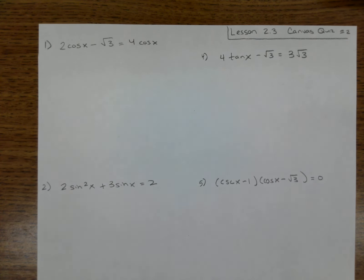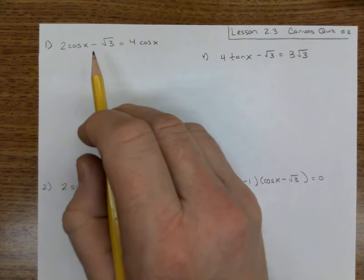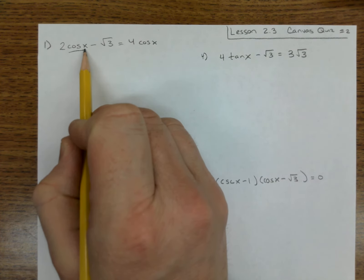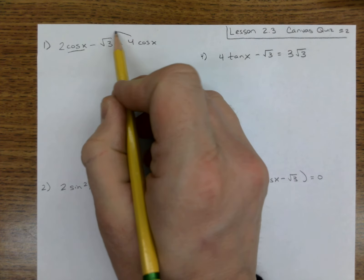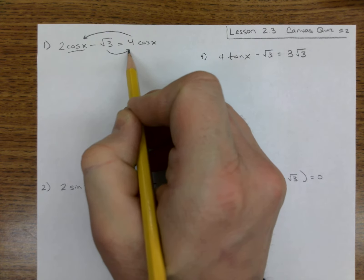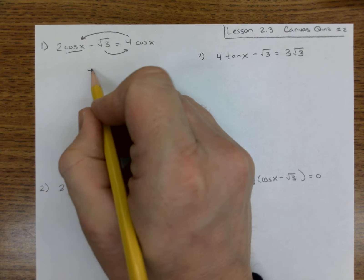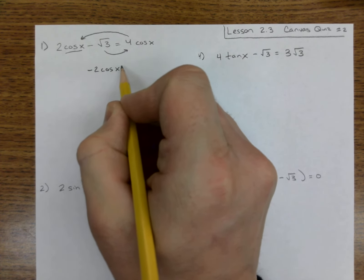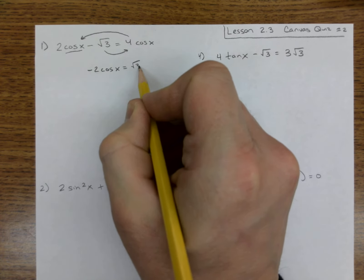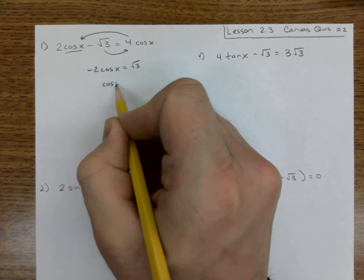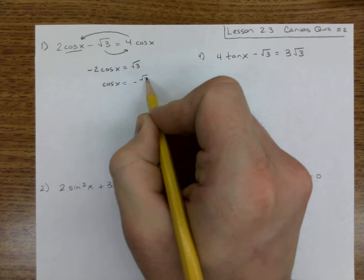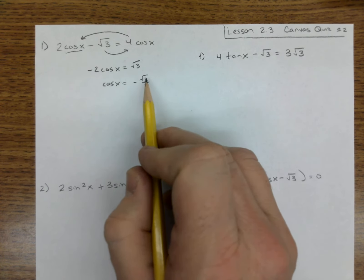Lesson 2.3, solving these trig equations. We want to isolate the cosine by itself, so let's move these two over here and let's move this over here. I subtract them over here and I have negative 2 cosine of x is root 3.